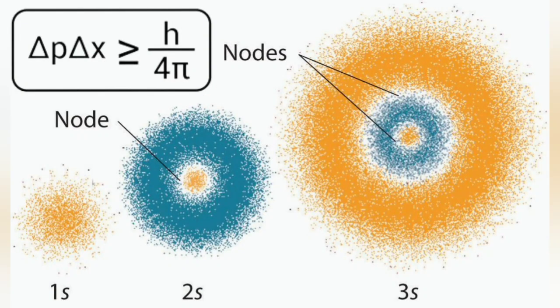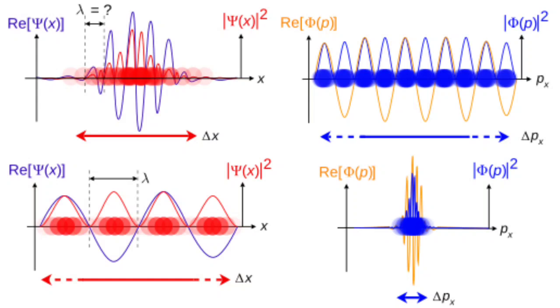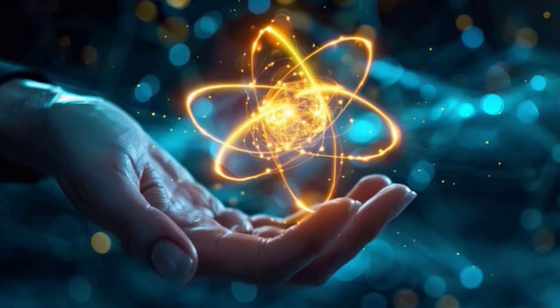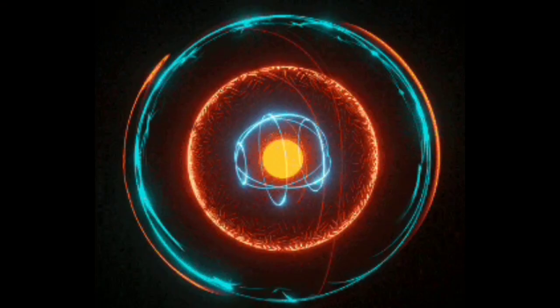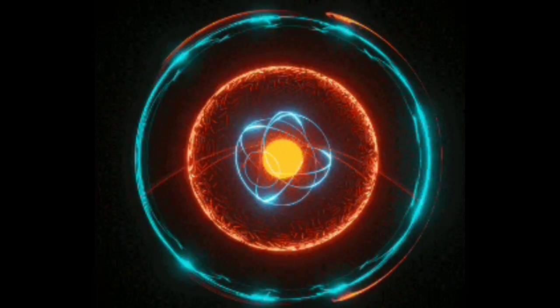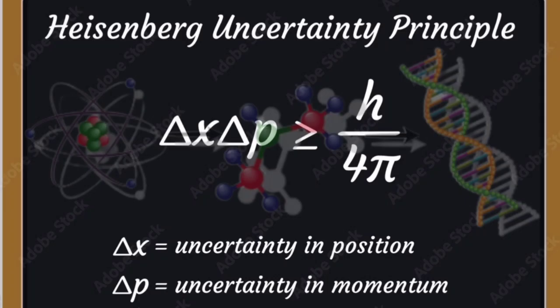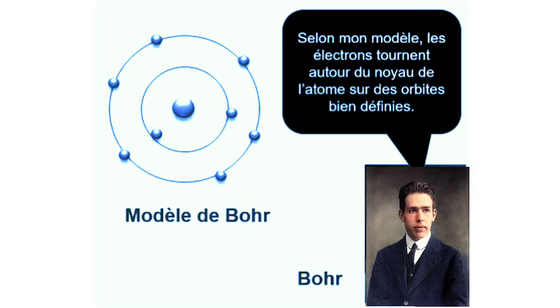This has huge implications for our understanding of the atom. If an electron were to collapse into the nucleus, we'd know both its position and momentum with great certainty, violating Heisenberg's uncertainty principle. It's like the universe has a built-in safeguard against atomic collapse. The very act of trying to pin down an electron prevents it from getting too close to the nucleus. This fundamental uncertainty is holding the atom together.